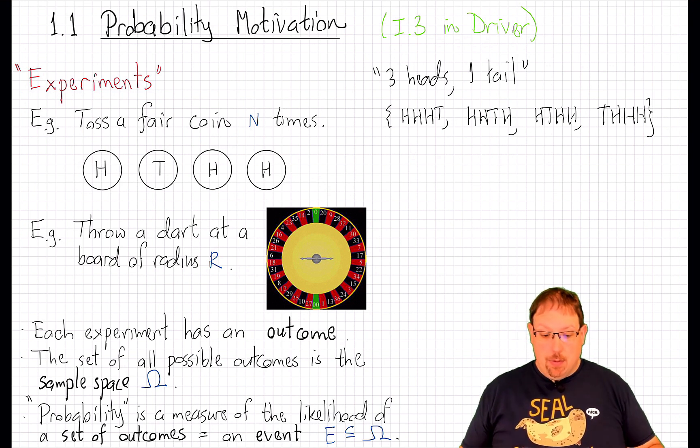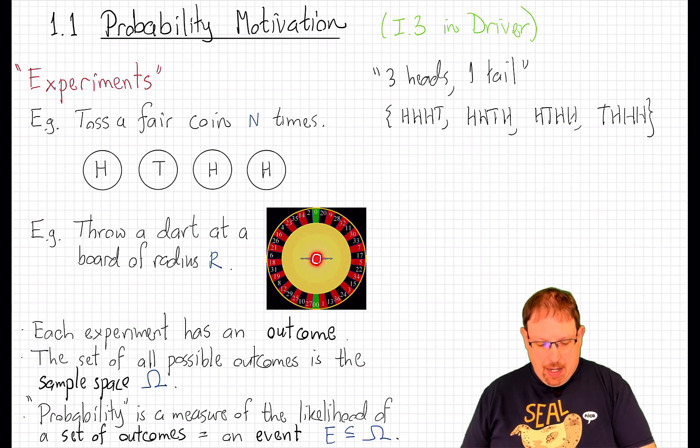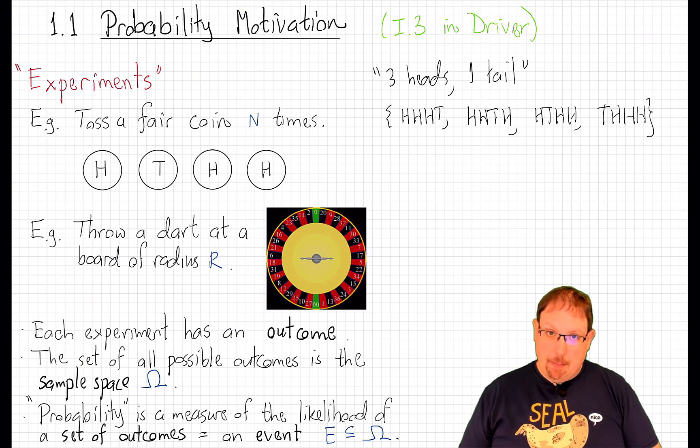And so in this case, which is another example of a uniform probability measure, we would calculate the ratio of the area of the bullseye to the area of the whole disc to calculate that probability.